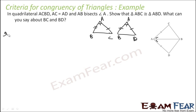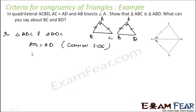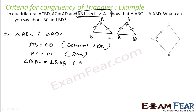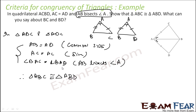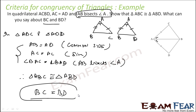Writing in plain English: for triangle ABC and triangle ABD — AB is equal to AB by common side, AC is equal to AD as given, and angle BAC is equal to angle BAD because AB bisects angle A. Therefore triangle ABC is congruent to triangle ABD. For the next part, BC and BD are corresponding sides of congruent triangles, so BC is equal to BD.